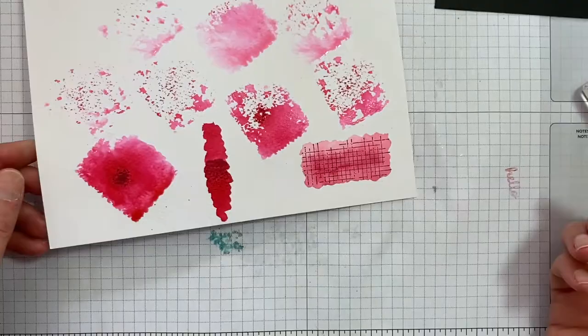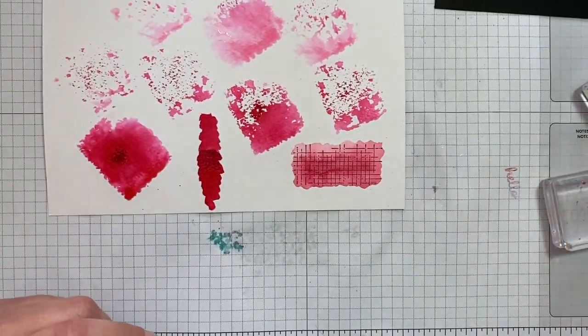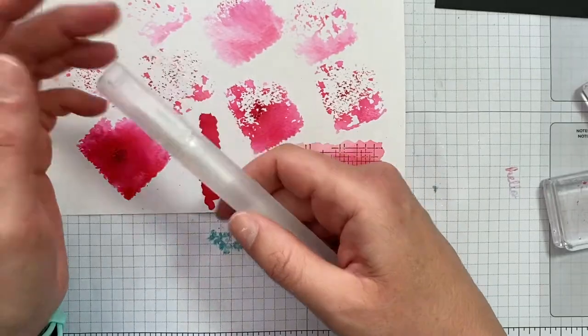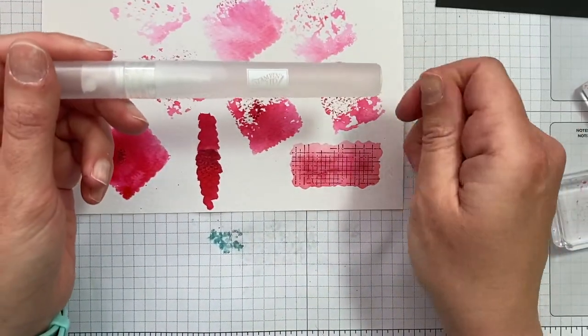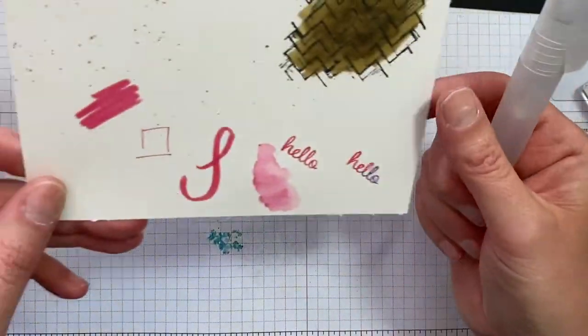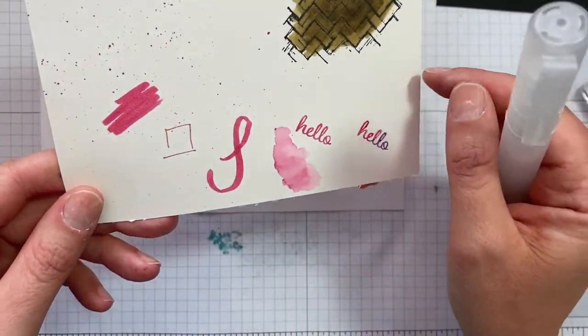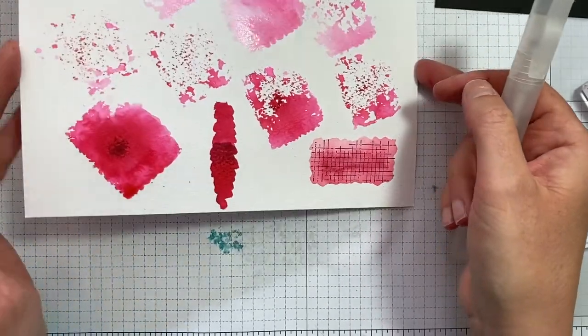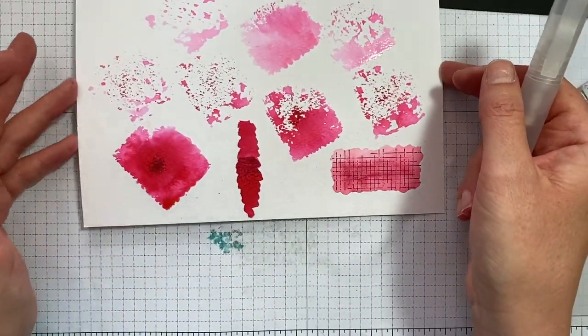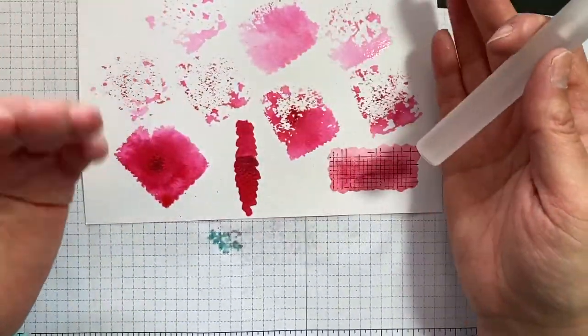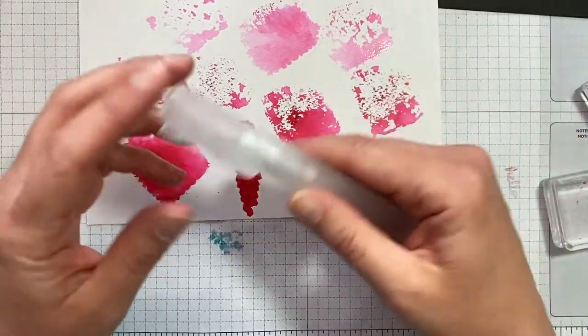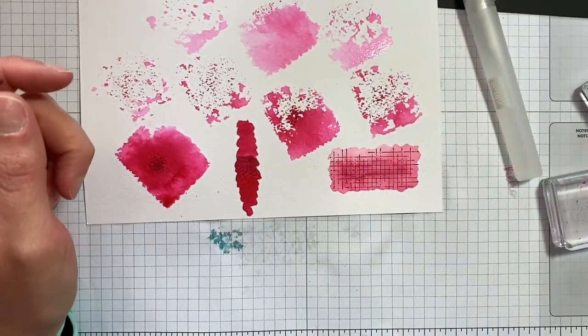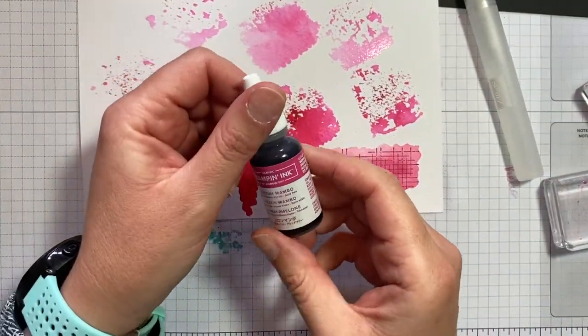So you can get some really nice background effects with that. You can actually put a few drops into your spritzer. Mix it and spritz directly onto your Fluid 100. The shimmery white takes water quite well too. The thick whisper white takes water relatively well. I wouldn't use the standard whisper white. You can then spritz through masks or just spritz for a background pattern or anything like that.